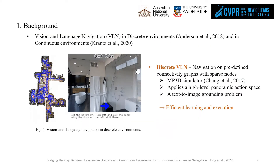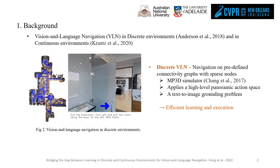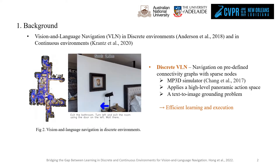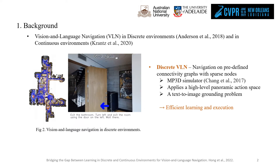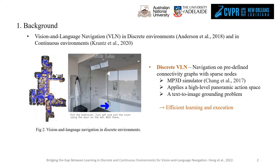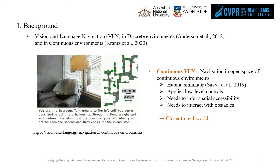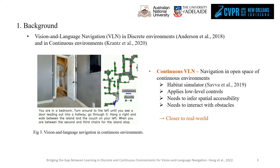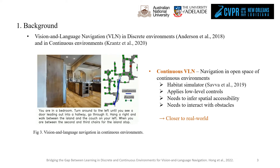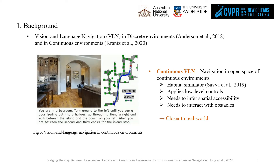The problem of vision and language navigation is formulated in both discrete and continuous environments. In the discrete setting, navigation is performed on a predefined connectivity graph with sparse viewpoints spread across environments. As a result, the agent navigates by teleporting among viewpoints, which enables efficient learning and execution. On the contrary, VLN in a continuous environment requires an agent to navigate in open space with low-level controls and interact with obstacles. This is a much harder setup but closer to the real world.